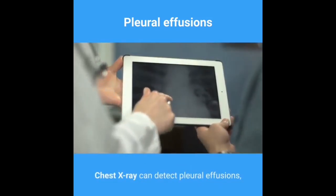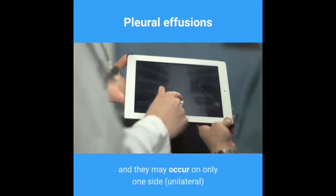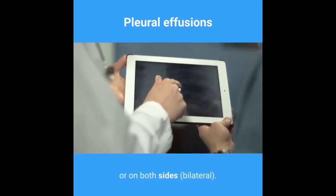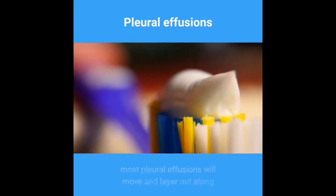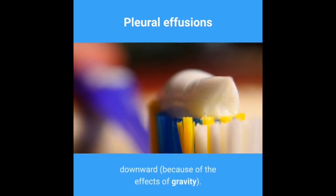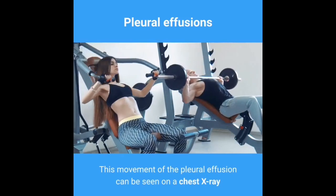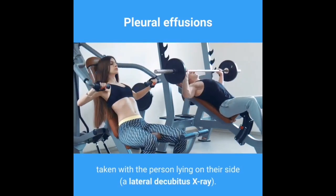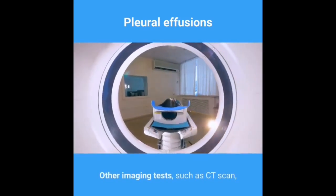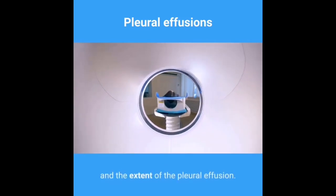Chest x-ray can detect pleural effusions, as they usually appear as whitish areas at the lung base, and may occur on only one side (unilateral) or on both sides (bilateral). If a person lies on their side for a few minutes, most pleural effusions will move and layer out along the downward side of the chest cavity due to gravity. This movement can be seen on a lateral decubitus x-ray. Other imaging tests, such as CT scan, may be ordered to further identify the possible cause and extent of the pleural effusion.